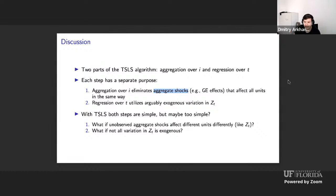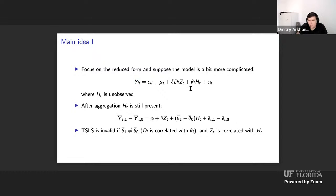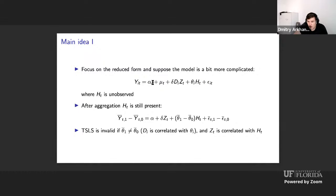The motivation for a different aggregation is that we aggregate to eliminate other aggregate shocks. But simple aggregation works only if those shocks affect everybody the same way. What if they affect units differently? That would happen precisely because our aggregate shock of interest z_t affects units differently — so why should other shocks not do the same? That is the main idea of the paper, which I'll cover in two slides.